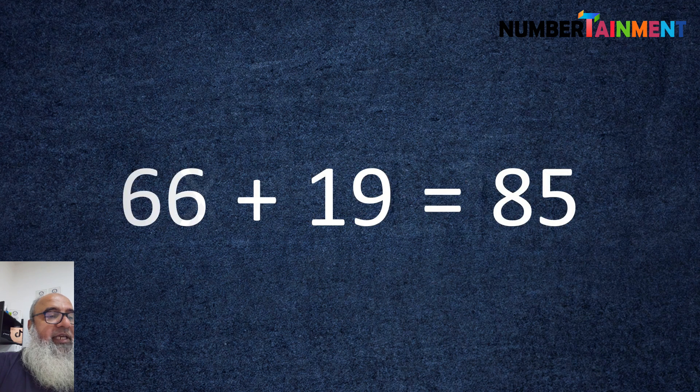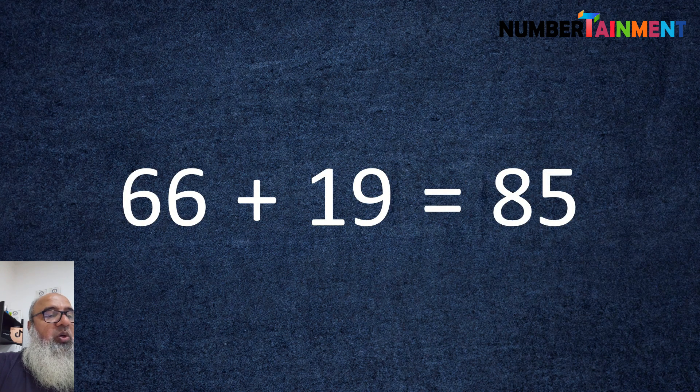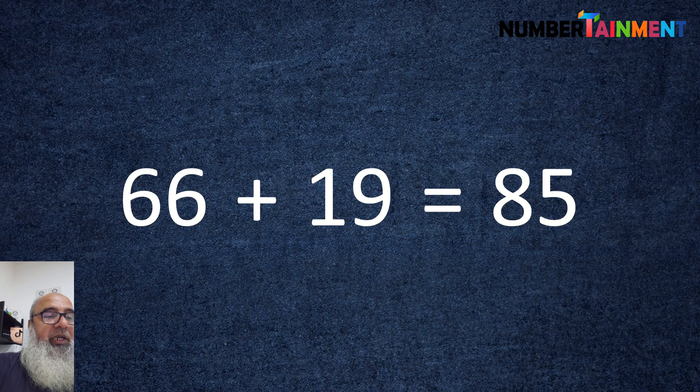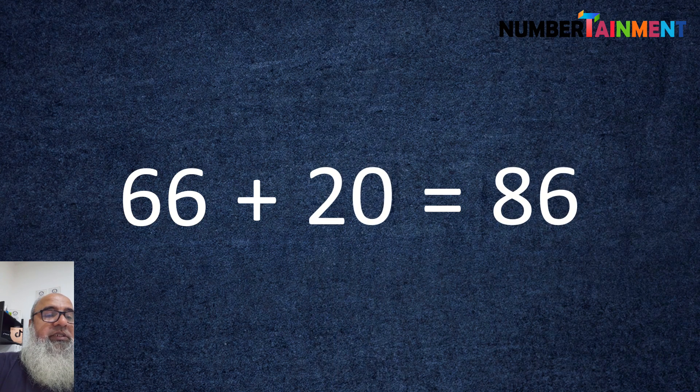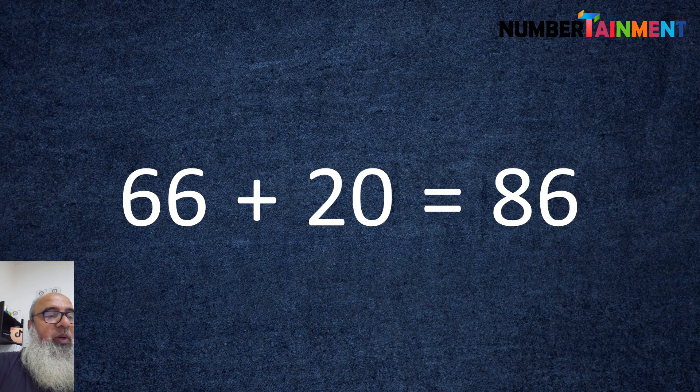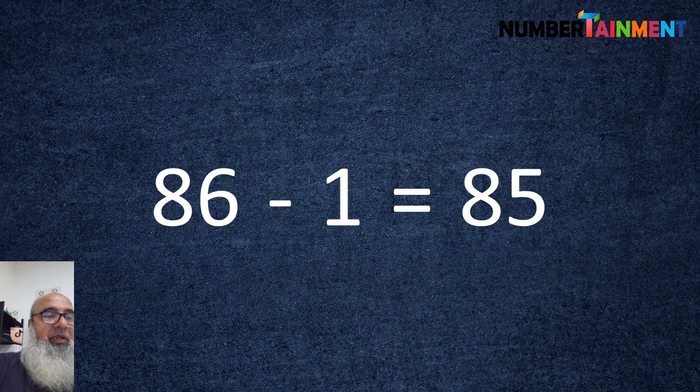So let's say 66 plus 19 we want to find, it is equal to 85 because we can add 20 to 66 to get 86 and take 1 away to get 85.